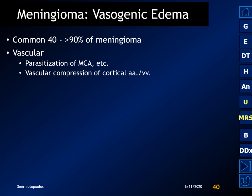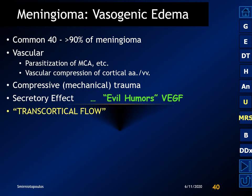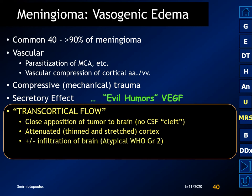Why do meningiomas have intraaxial vasogenic edema? It's reported in up to 90% of meningiomas. It may be due to vascularity of the tumor, parasitization of the cortical vessels, mechanical trauma, or a secretory effect where the tumor secretes fluid containing vascular endothelial growth factor. But probably most commonly it's due to transcortical flow — reflecting the fact that slow growth and close apposition of the tumor to the brain eliminates the CSF cleft. The gray matter, normally a barrier to the spread of interstitial edema, becomes thinned and stretched.